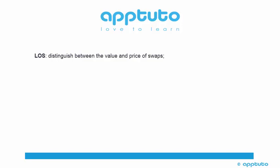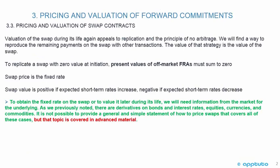This LOS distinguishes between the value and price of swaps — pricing and valuation of swap contracts. Valuation of the swap during its life appeals to replication and the principle of no arbitrage. We find a way to reproduce the remaining payments on the swap with other transactions, and the value of that strategy is the value of the swap. To replicate a swap with zero value at initiation, present values of off-market FRAs must sum to zero. They're off-market FRAs because we're using one swap price for the series of FRAs.